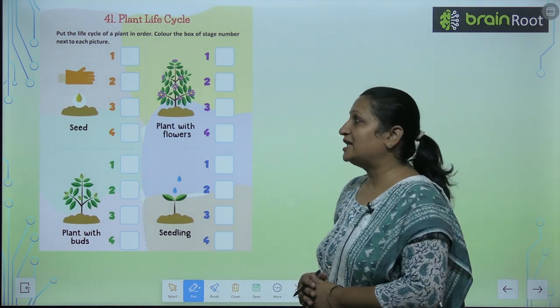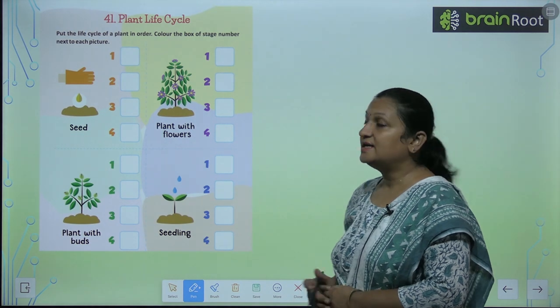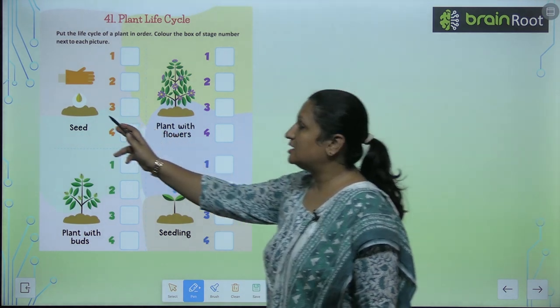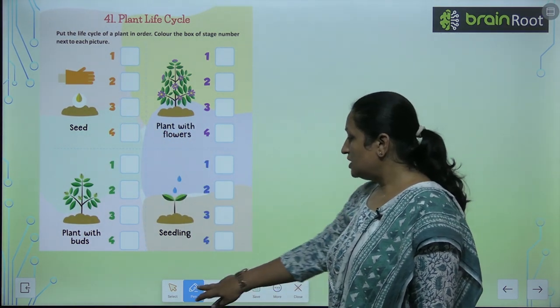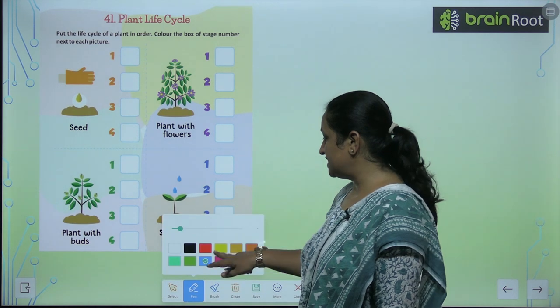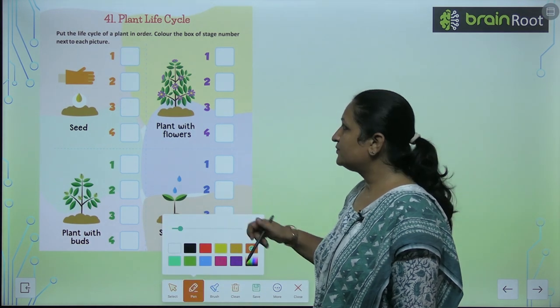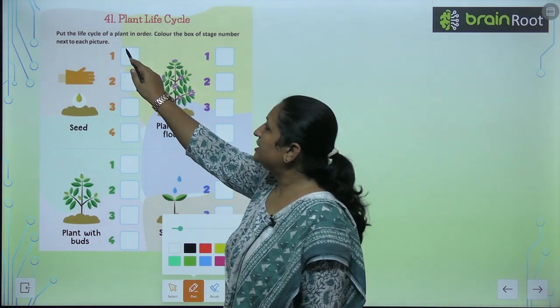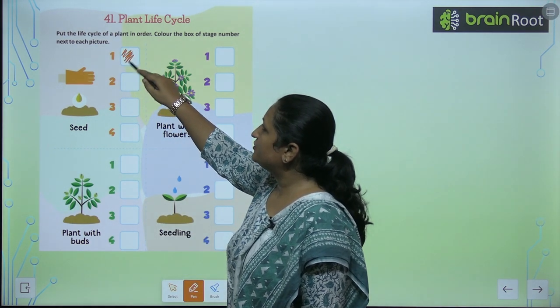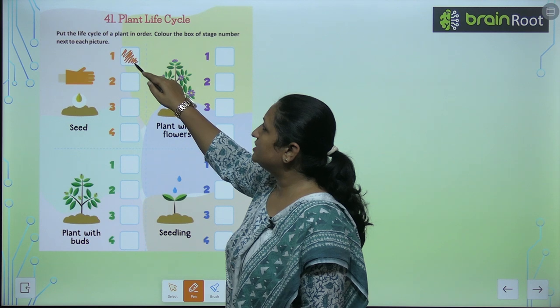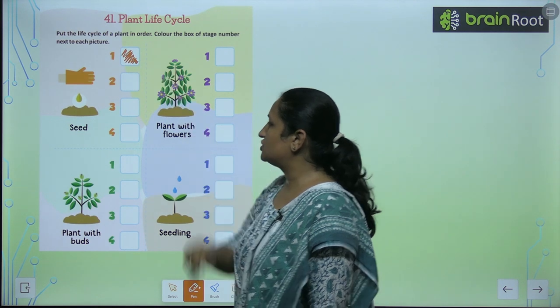So what do we do first? We add seeds to the soil. So the first stage is we add seeds to the soil. We will color this stage with orange.